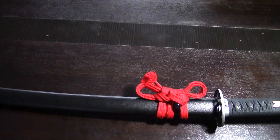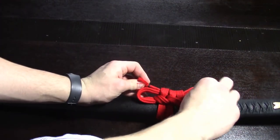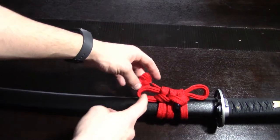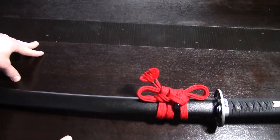There you go. There's your Butterfly Knot or Chomusubi. If you so want to, as you can see, there's the butterfly wings, there's the antennas.